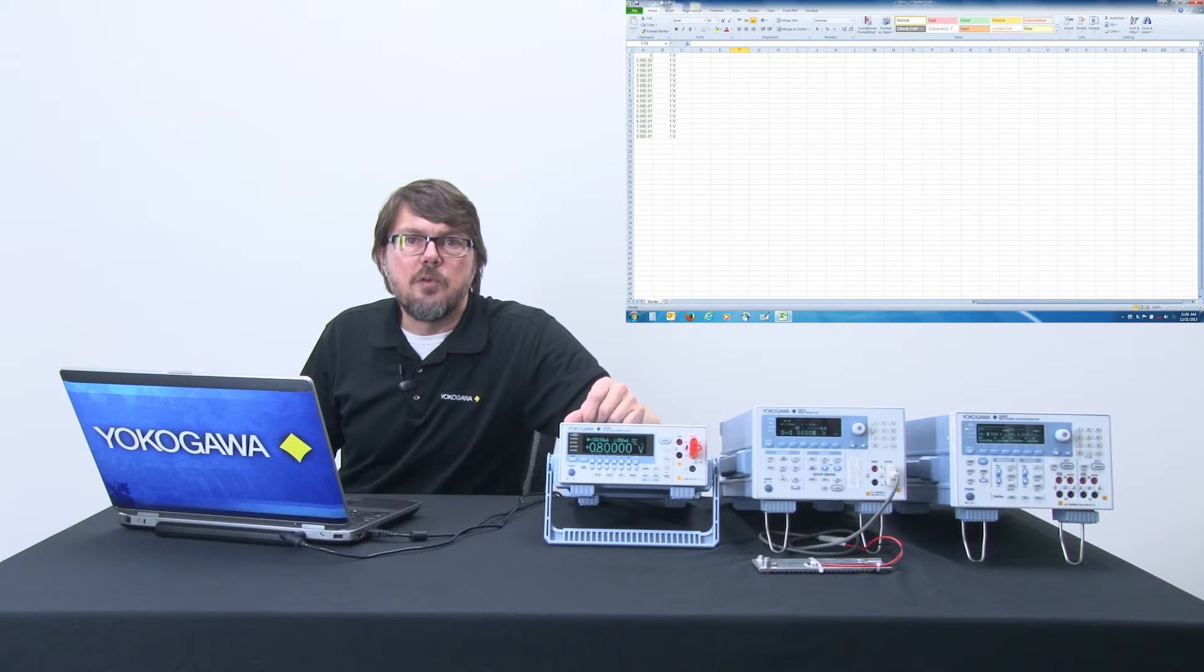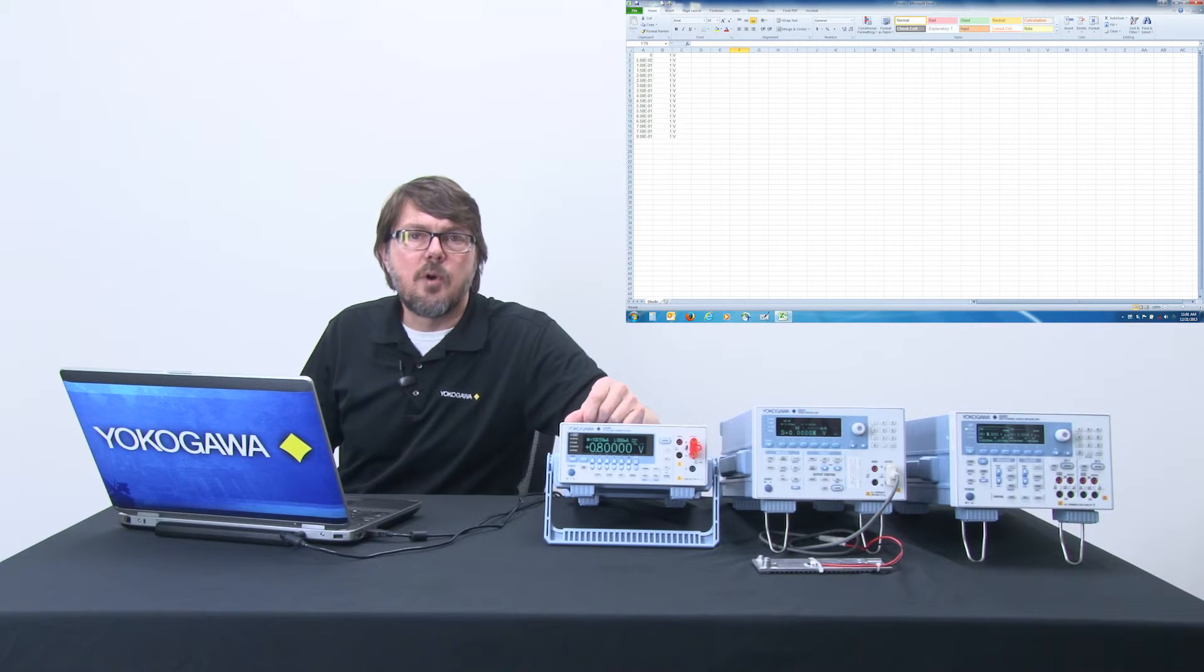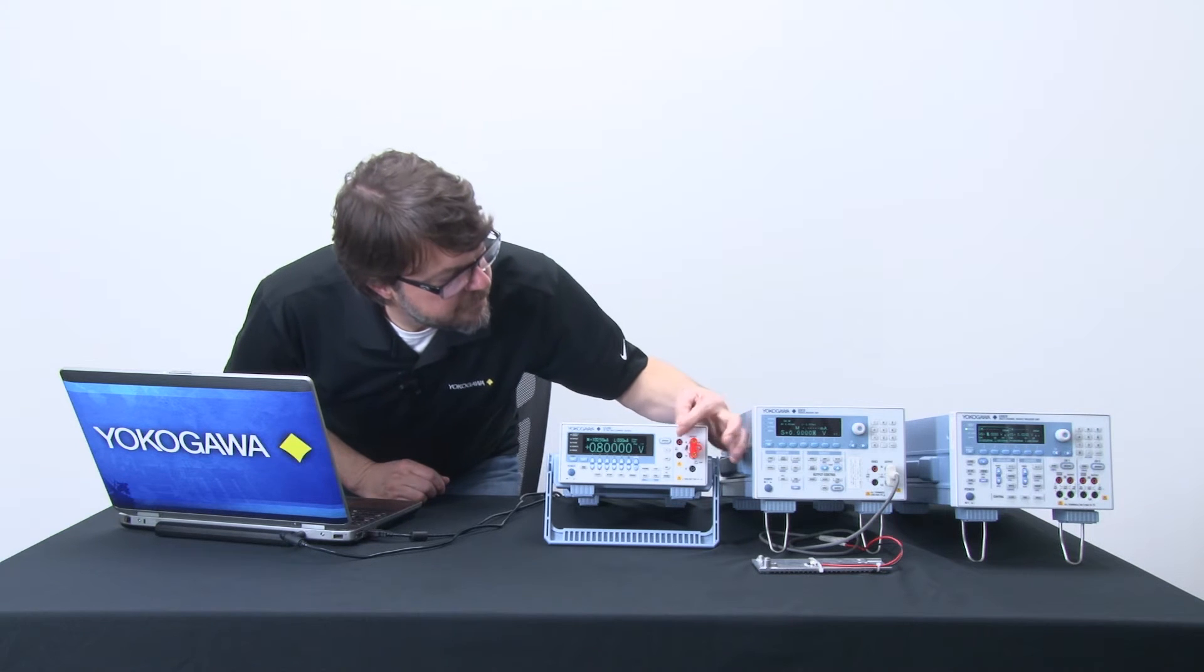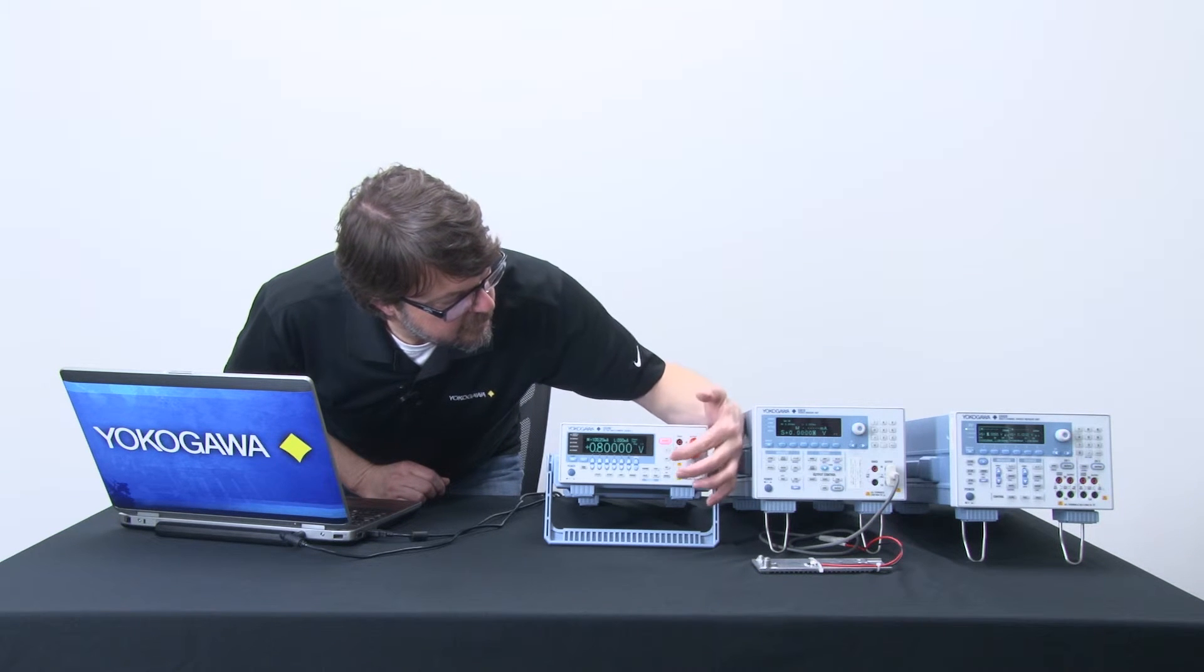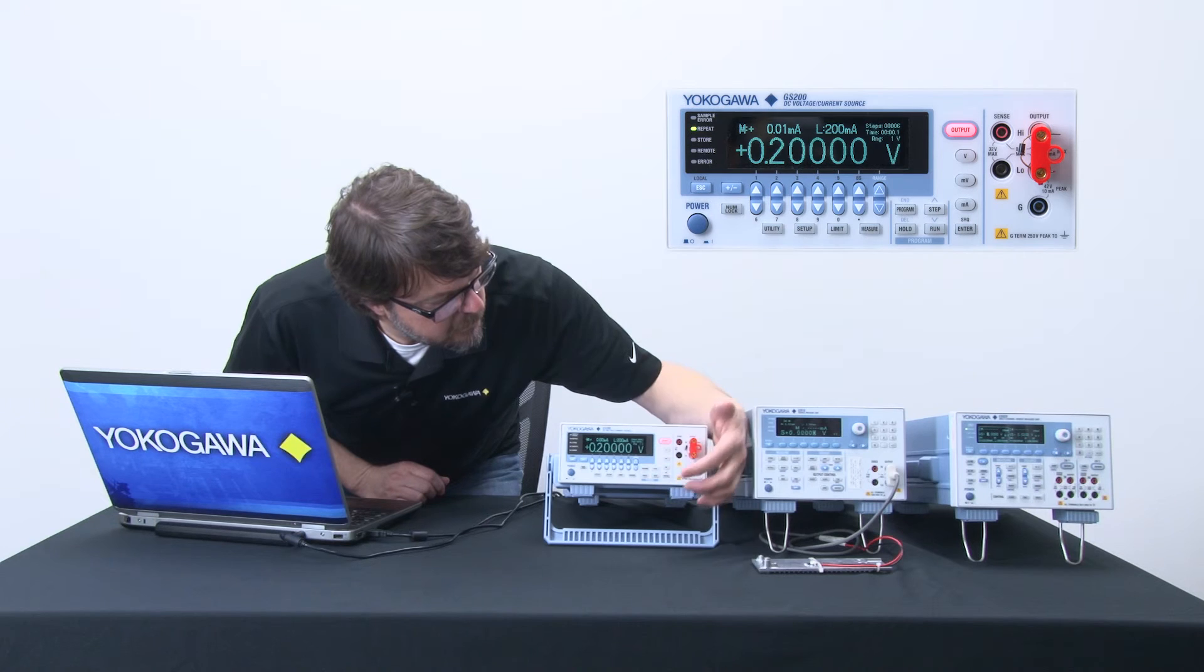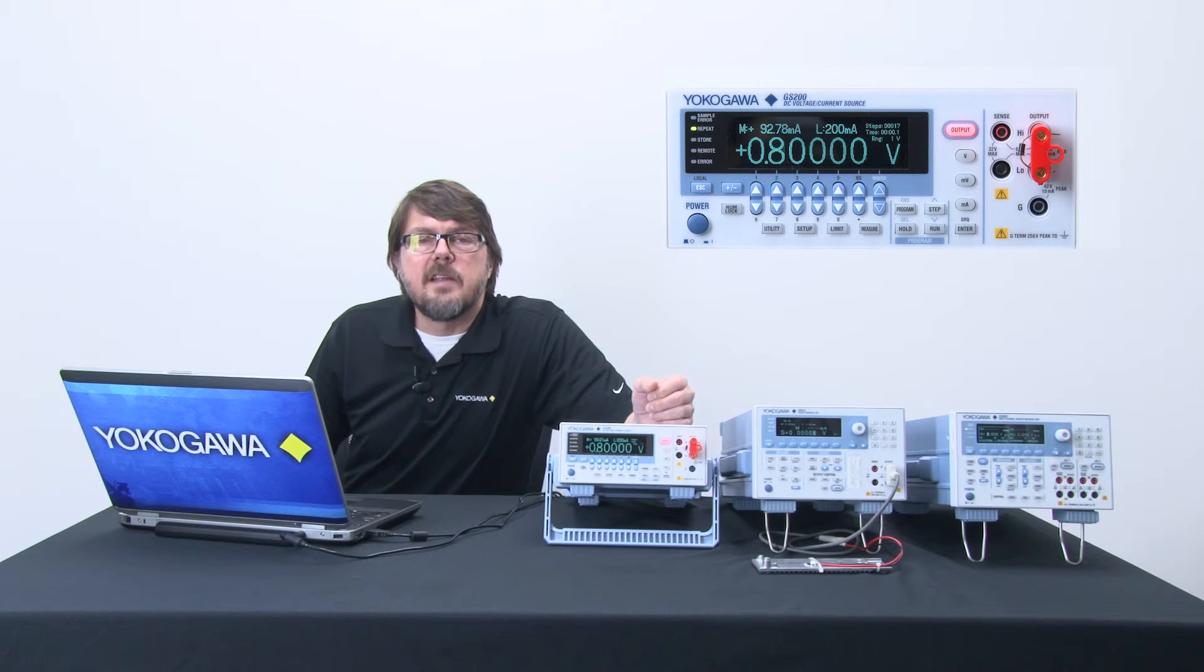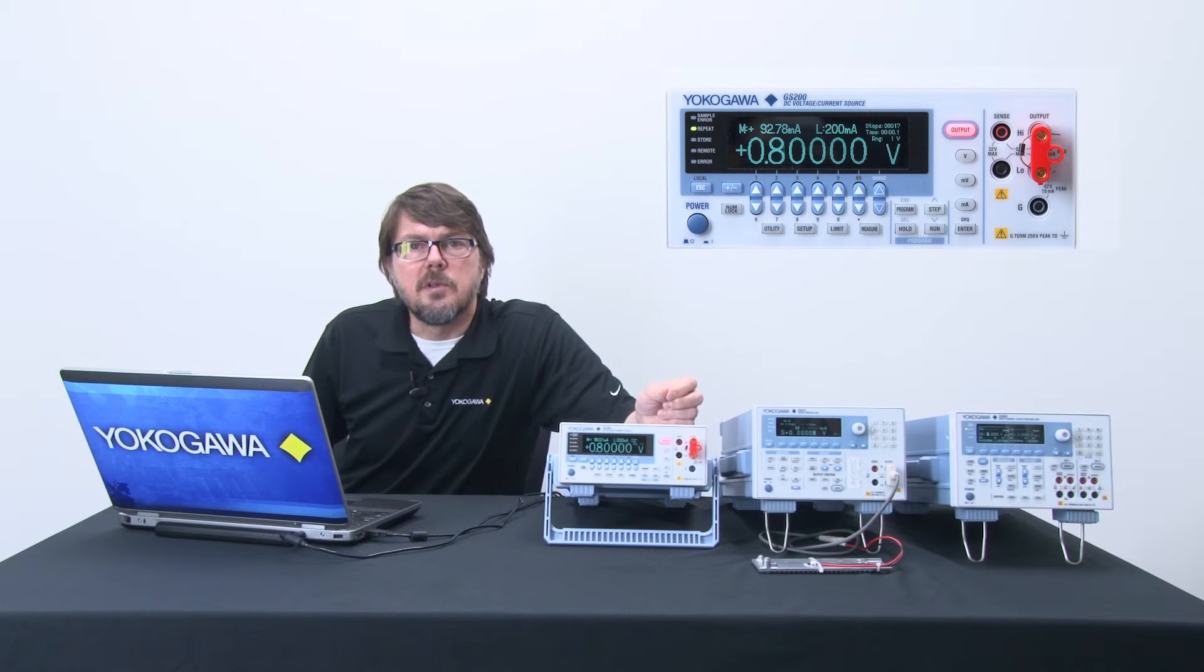Once I've loaded this program, just a CSV file, into the GS200 storage media, then I simply press output, then program, and then run. It will run one time. Okay, that's it. The program has run completely.